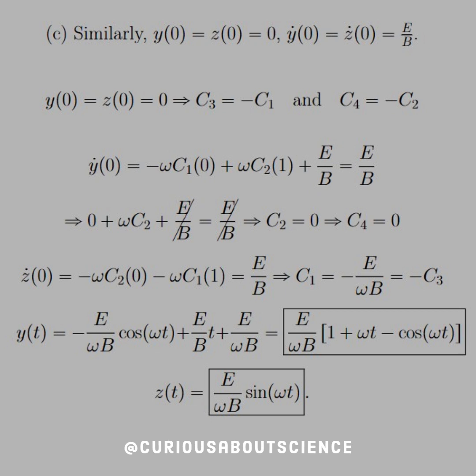So we know that y dot yields a cancellation term since the factor e over b is there, and they cancel out with one another, leading us to c2 equals 0, which implies c4 equals 0.